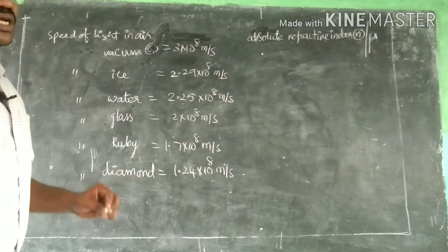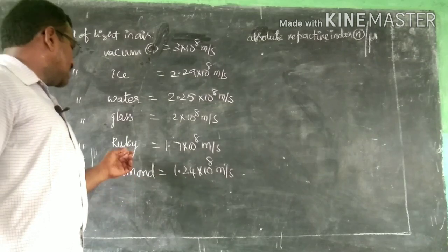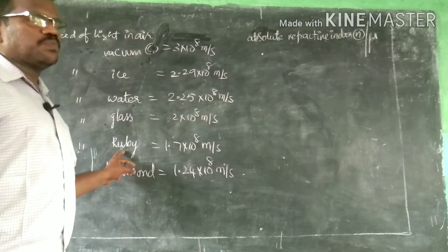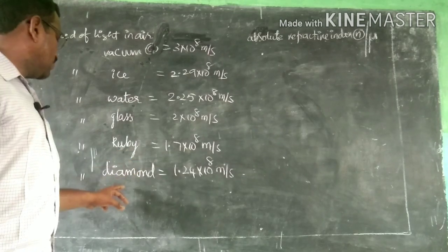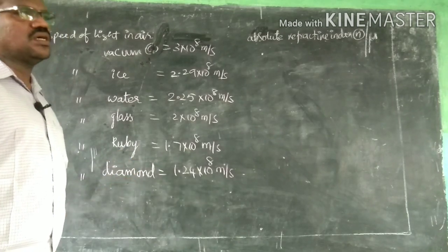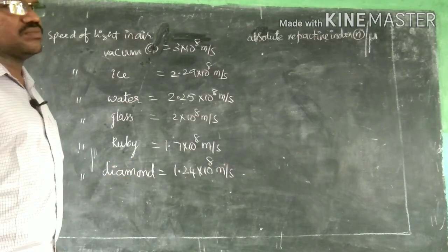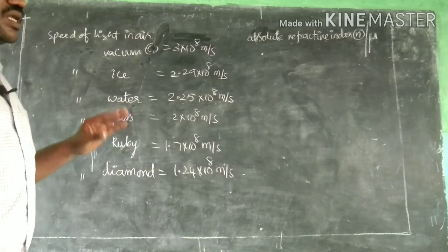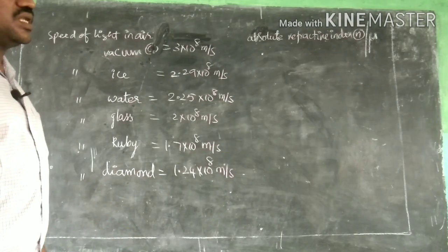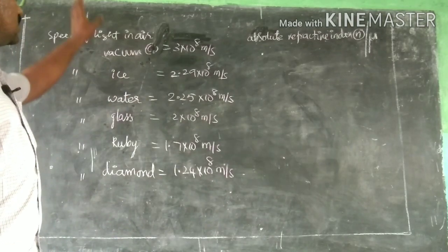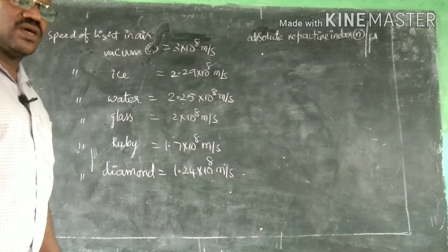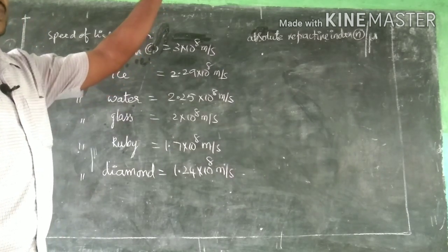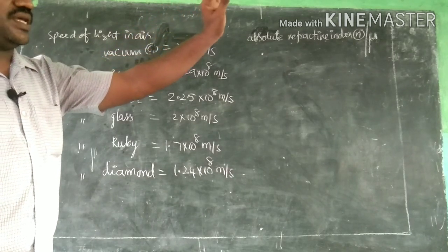Glass is said to be the optically denser medium. Similarly, comparing ruby and diamond: ruby becomes the optically rarer medium whereas diamond becomes the optically denser medium. These concepts of optically rarer and optically denser medium I already discussed before. Among all the given values, air is said to be the most optically rarer medium.